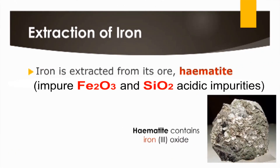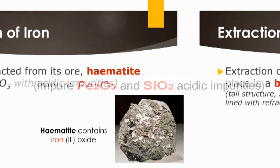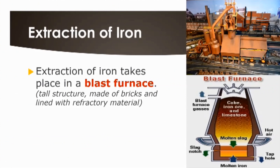In reality, iron does not exist by itself but is found in an ore called hematite, as you can see in the diagram. Hematite contains the compound called iron oxide, along with other acidic impurities. From this hematite we can actually extract out the pure metal.